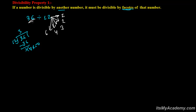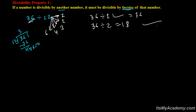So 36 can be divided by 1 — that's perfect, you get 36. 36 is divisible by 2 — that's right, you get 18. And 36 is divisible by 3 — that's right, you get 12.